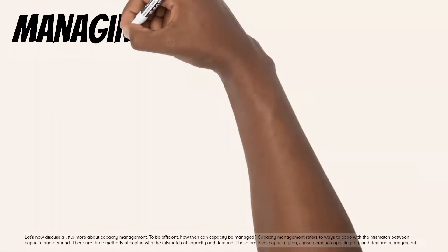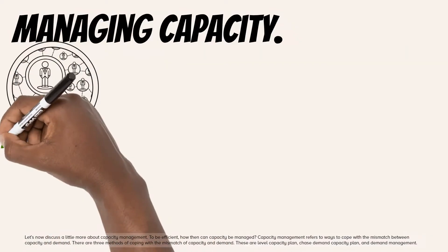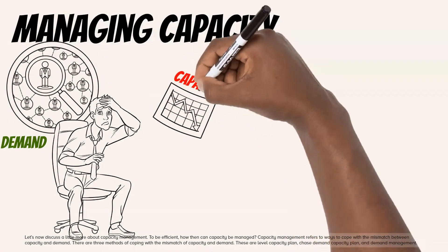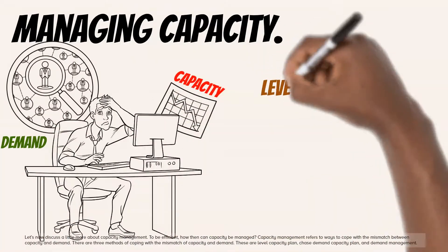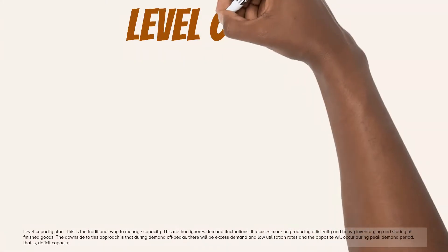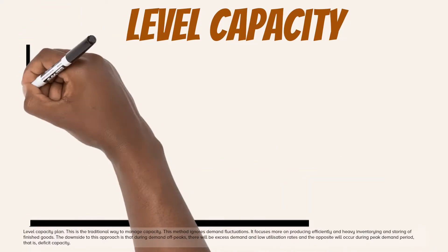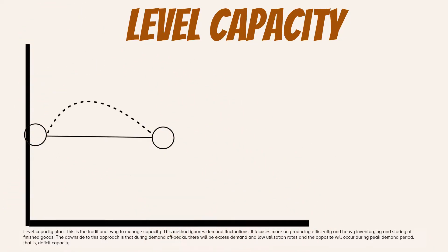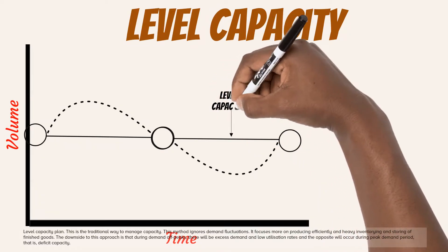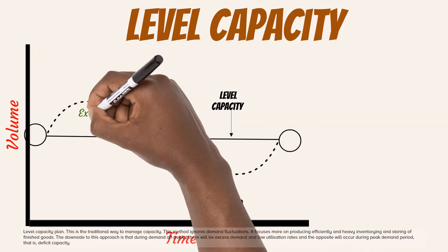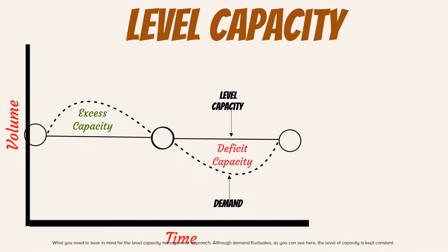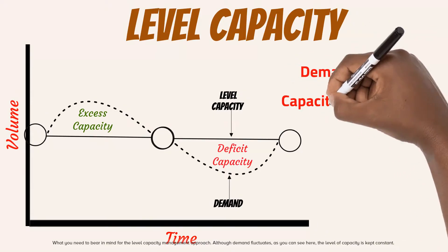Let's now discuss capacity management further. Capacity management refers to ways to cope with the mismatch between capacity and demand. There are three methods: level capacity plan, chase demand capacity plan, and demand management. The level capacity plan is the traditional way to manage capacity. This method ignores demand fluctuations, focusing more on producing efficiently and heavily inventorying and storing finished goods. The downside is that during demand off-peaks there will be excess capacity and low utilization rates, and the opposite occurs during peak demand periods — that is, deficit capacity. The key point is that although demand fluctuates, the level of capacity is kept constant.